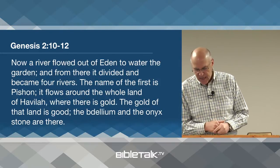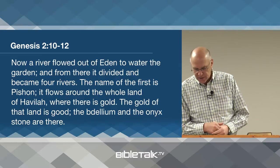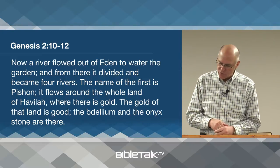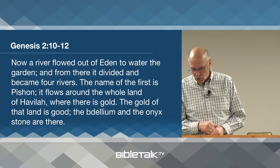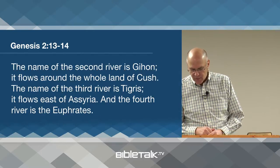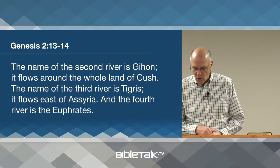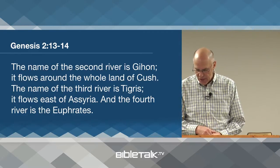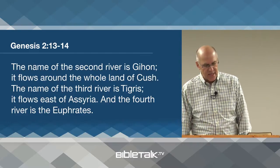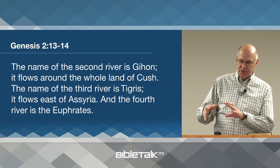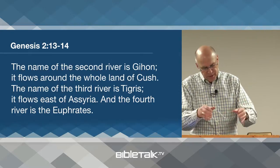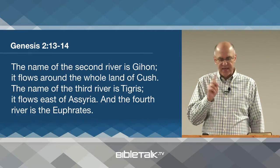Verse 10 says: 'Now a river flowed out of Eden to water the garden, and from there it divided and became four rivers.' The name of the first is Pishon, flowing around the land of Havilah where there is gold. The second river is Gihon, flowing around the land of Cush. The third is the Tigris, flowing east of Assyria, and the fourth is the Euphrates. The author describes rivers contained in this area.